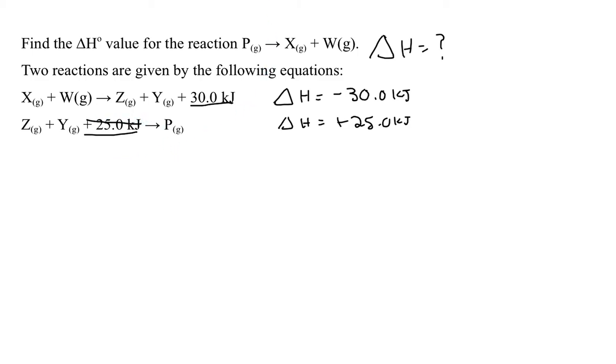Now I'm going to start building up equations to get P becomes X plus W. I'm going to start with finding one of the equations that has species P in it. I find that in the second equation, but it's on the incorrect side, so I want to flip the second equation. So P gas is going to produce Z gas plus Y gas. Because I flipped the second equation, the change in enthalpy is going to be negative 25.0 kilojoules.